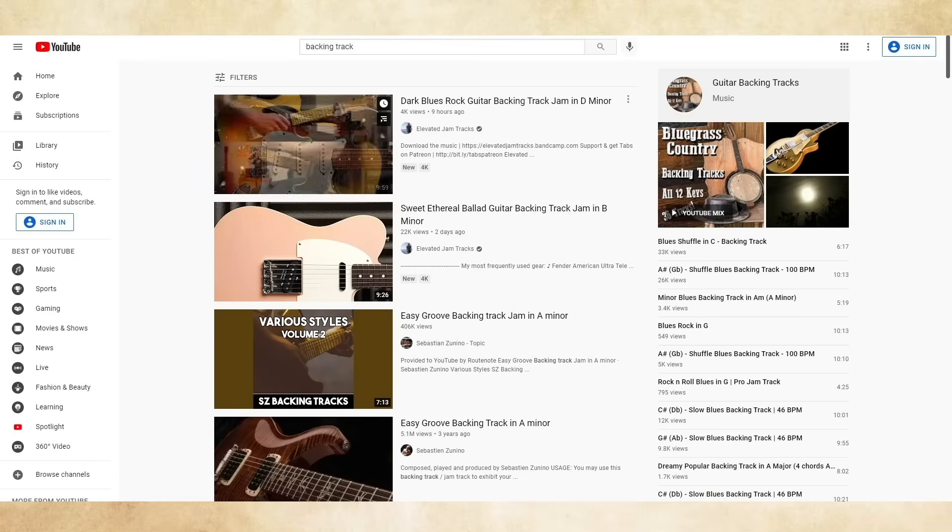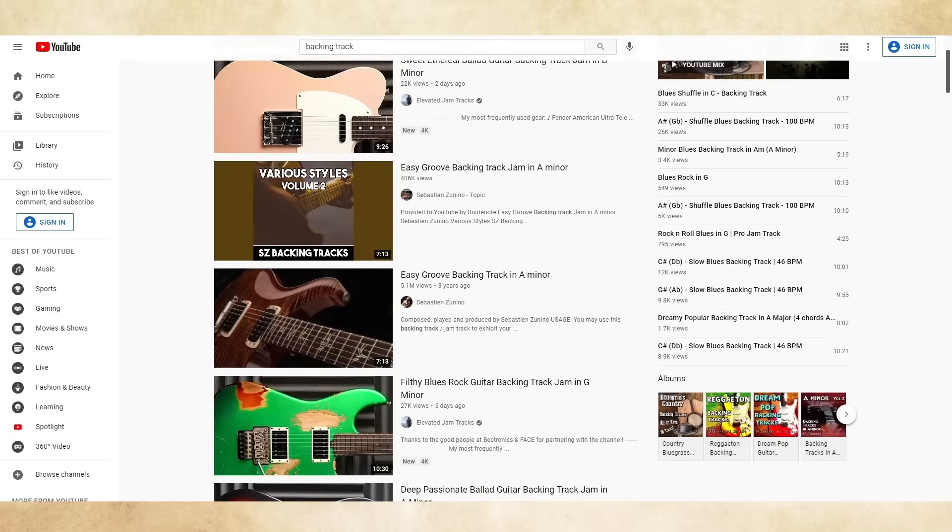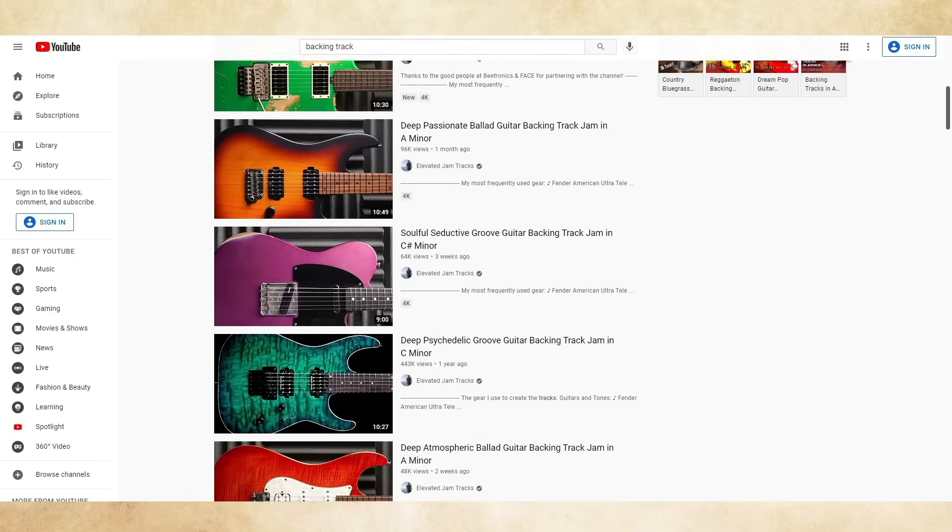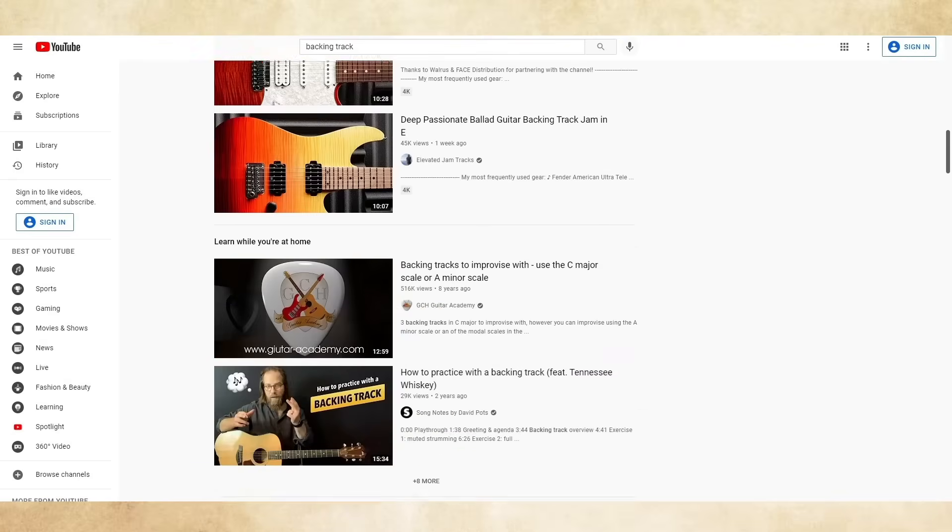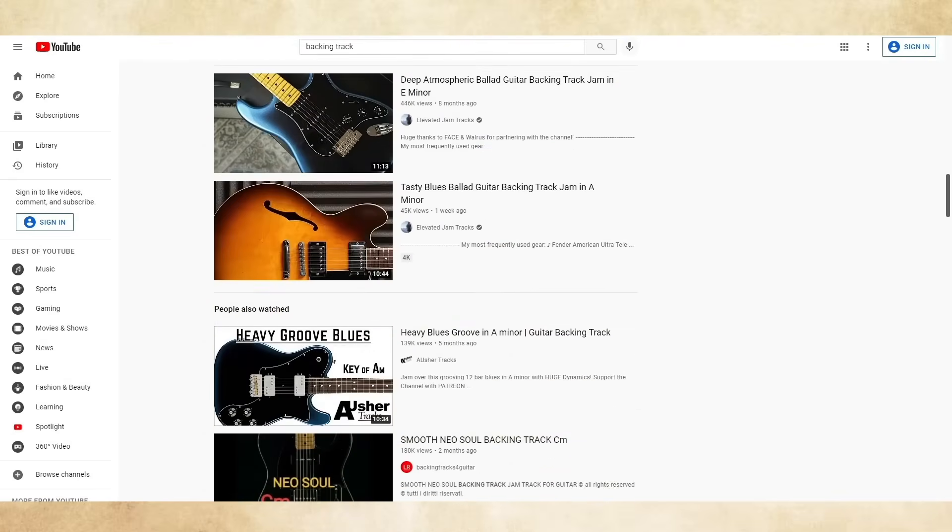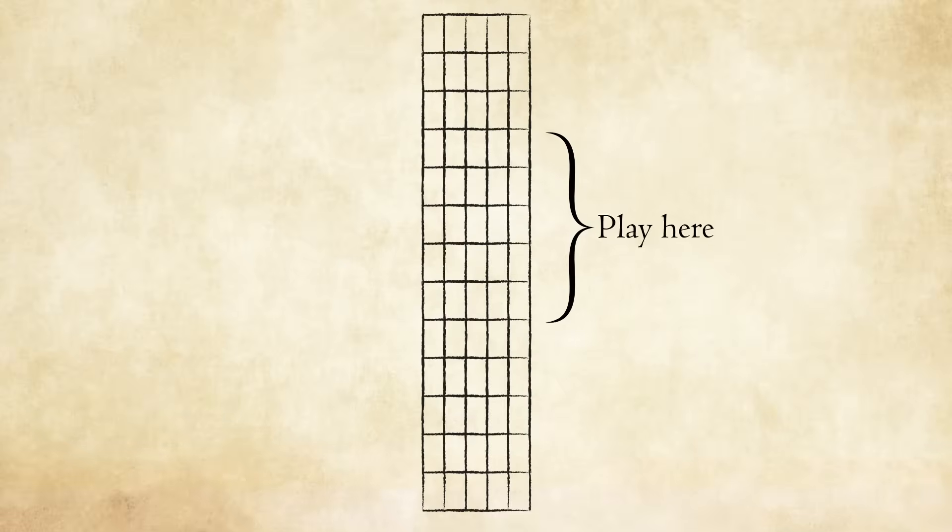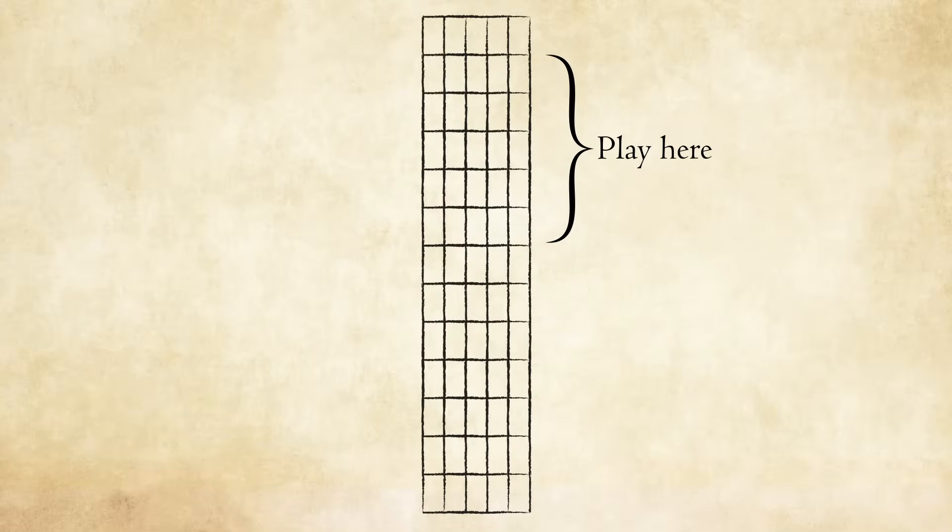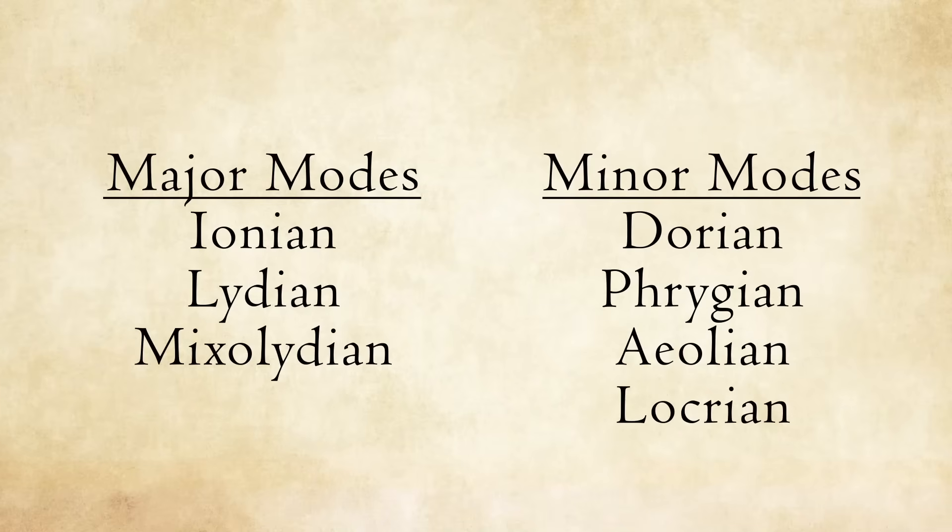Improvising along to backing tracks is the easiest way to make this method second nature to you. There are thousands of them all over YouTube, and they usually tell you what key they are in. When improvising, be sure to play all over the neck. Don't just stay in one position. Try changing keys and modes spontaneously. If a backing track is in G major, try G Lydian or Mixolydian. If it's in A minor, try A Dorian or A Phrygian. Listen closely to how the mode alters the feel of the melodies you are playing.